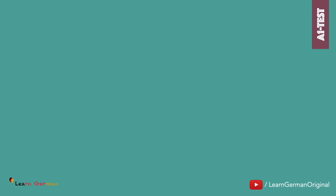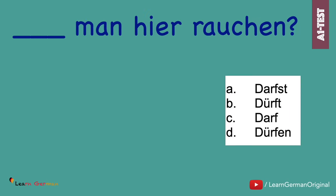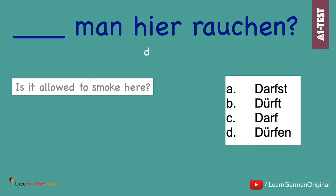Number 17. Darf man hier rauchen? You have to conjugate the verb correctly. And the answer is: Darf man hier rauchen? With the pronoun man, the verb has to be conjugated in the third person singular.